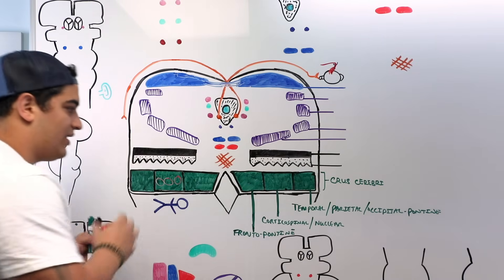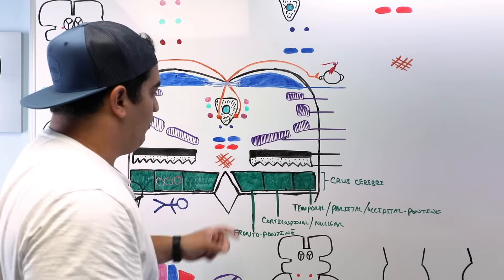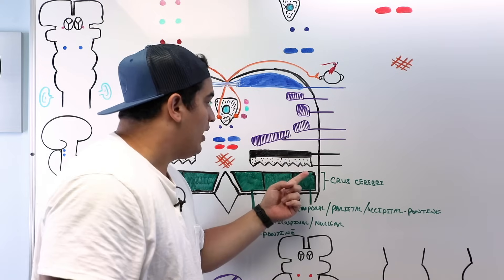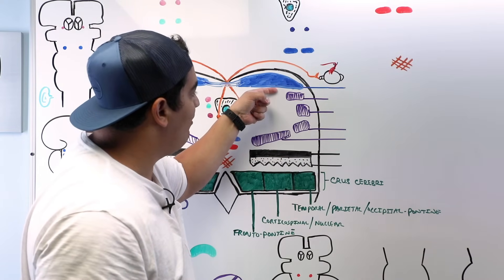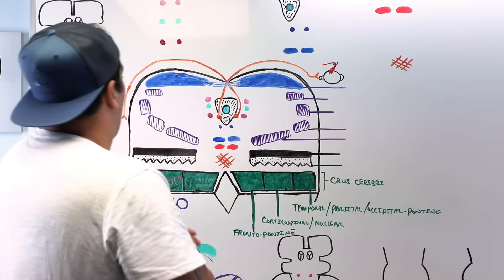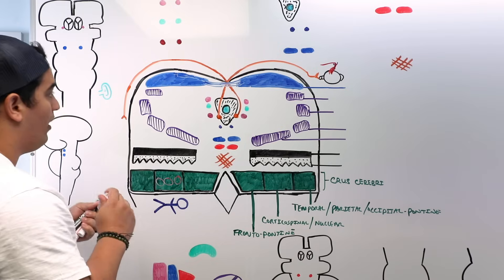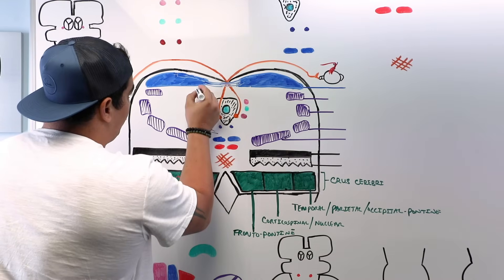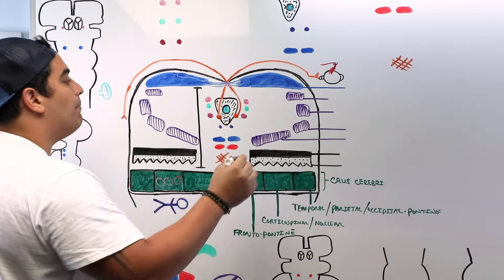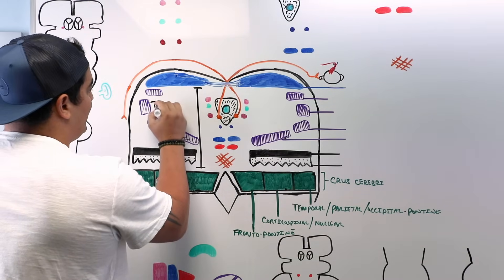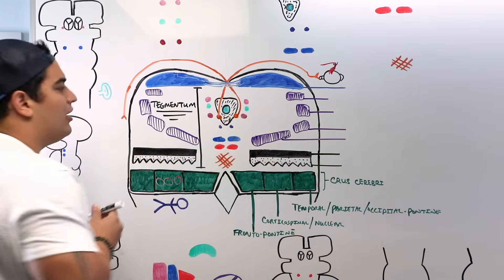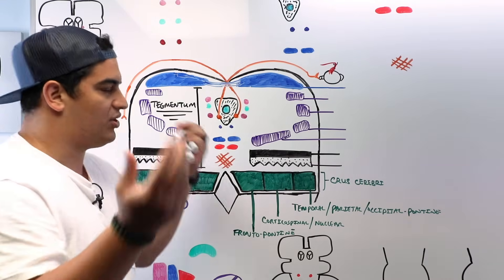We've covered the ventral portion — the crus cerebri. The next structure is everything between the inferior colliculus and the crus cerebri; that whole chunk is called the tegmentum. There is a lot of important stuff in the tegmentum.